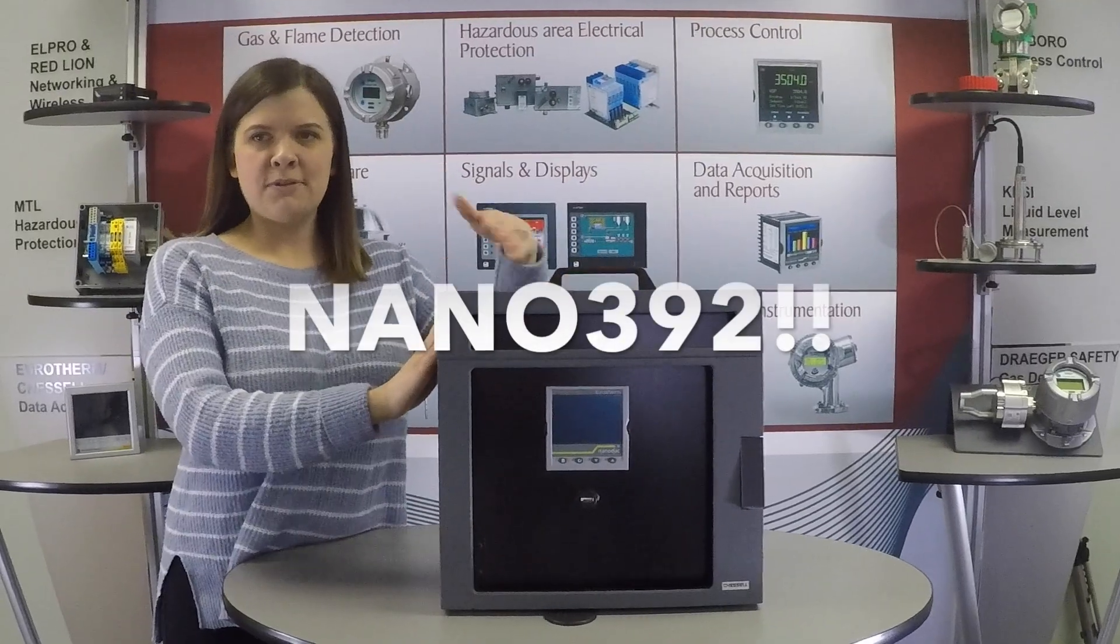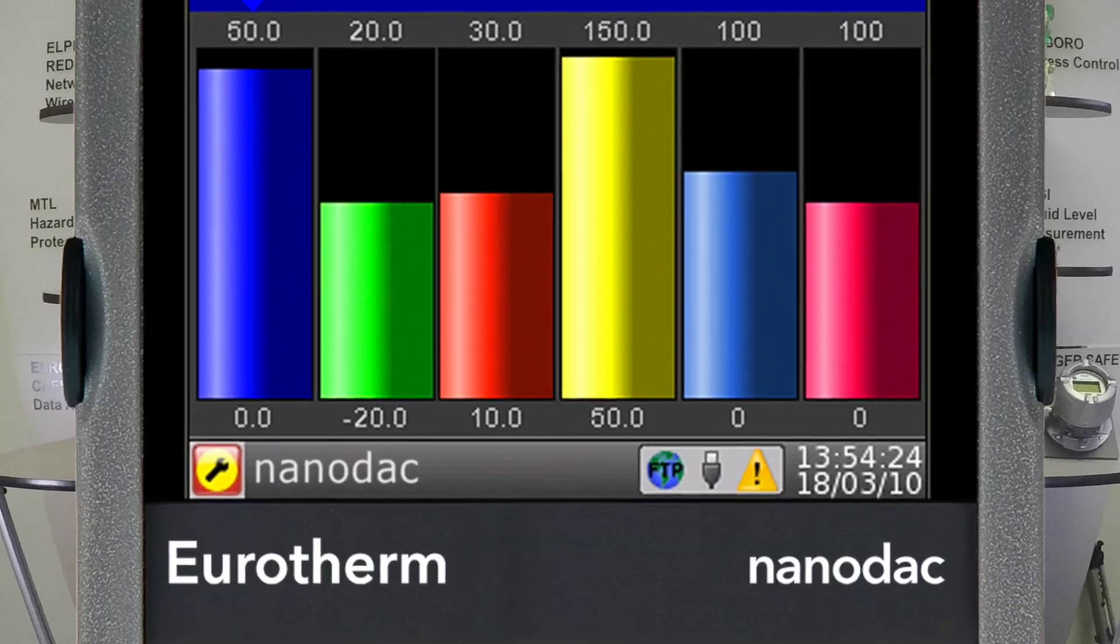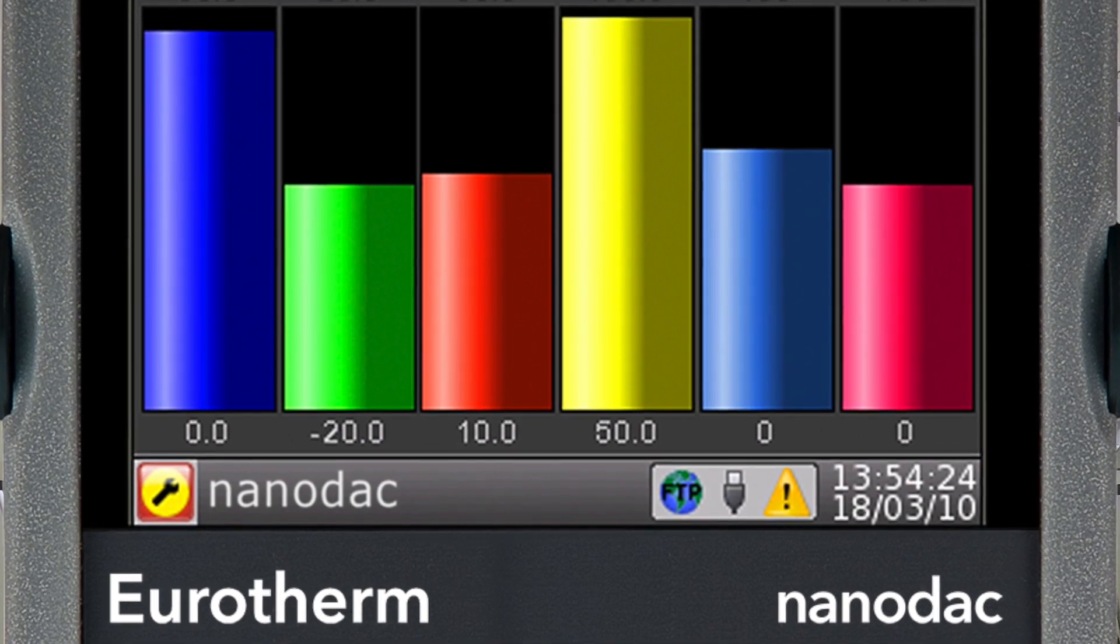The Nano 392 is a one-of-a-kind retrofitted recorder. This product combines the Eurotherm NanoDaq and your already installed 392 enclosure.